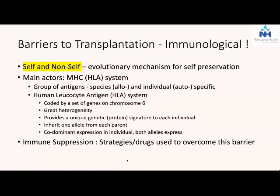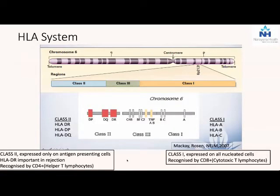This is a barrier for transplantation because our body recognizes tissues that do not belong to us. Immune suppression is the science or strategy used to overcome this barrier. Every patient who has organ transplantation will require immunosuppression - of that there is no doubt whatsoever. This is the HLA system in brief. The reference here, Michael Rosen, New England Journal of Medicine 2007, is a very nice article. Those of you who are interested should read it, as it covers a lot of this ground and describes it in words we can understand easily.